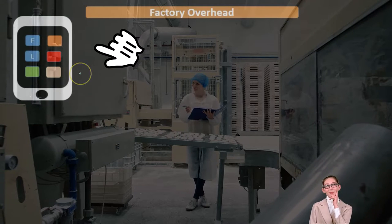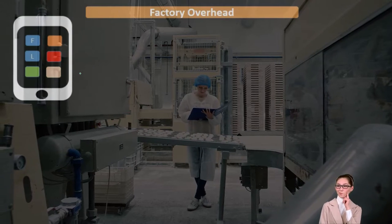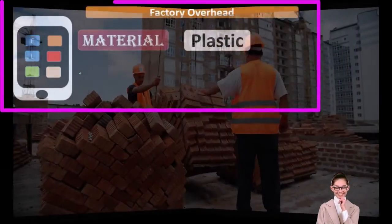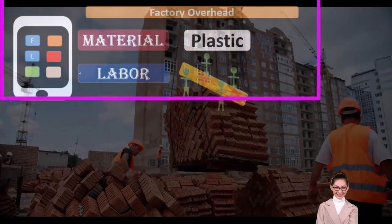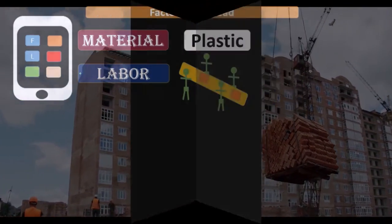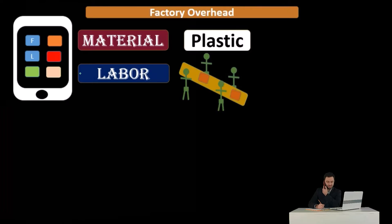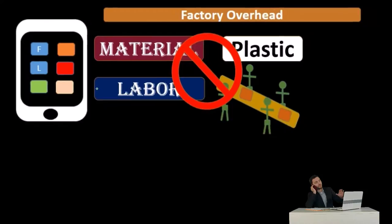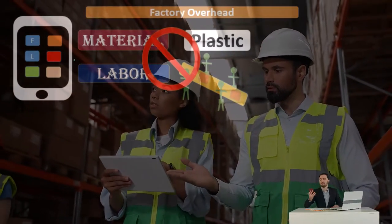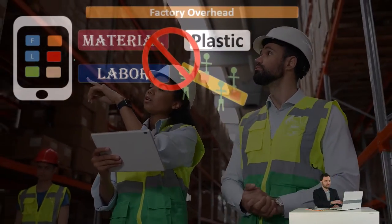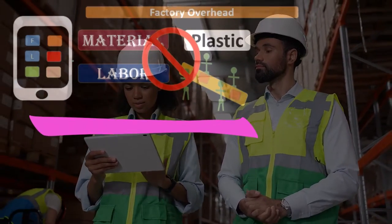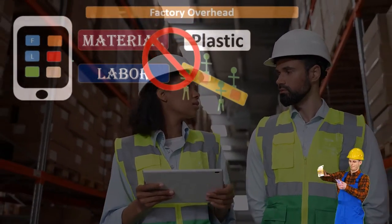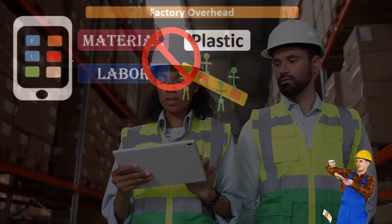For example, if we're making something like a tablet, that tablet will consist of direct materials like the plastic and the metal in it, and the labor of people working directly on the tablet. But factory overhead is something else that is part of the inventory we are creating, which we cannot apply directly to a particular piece of inventory using the job cost system or the process cost system.